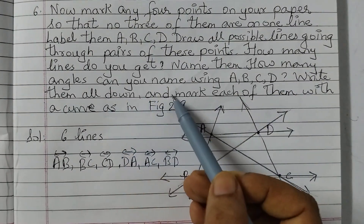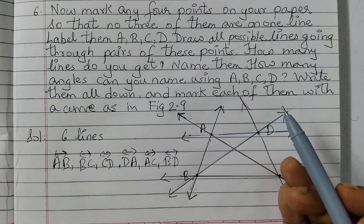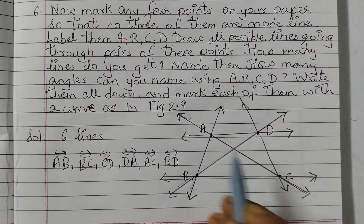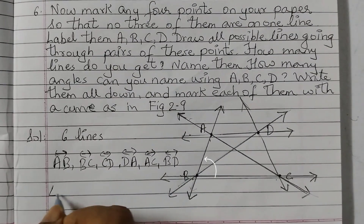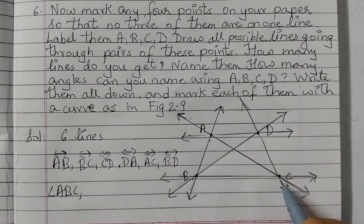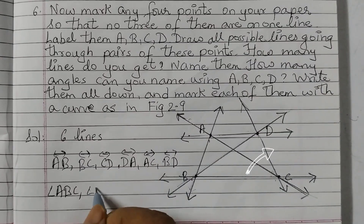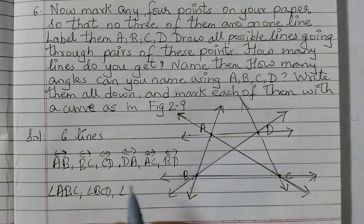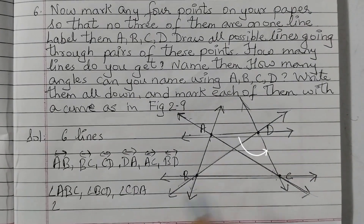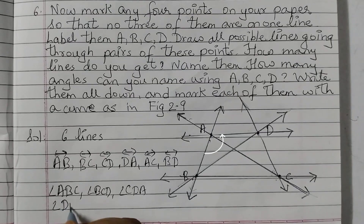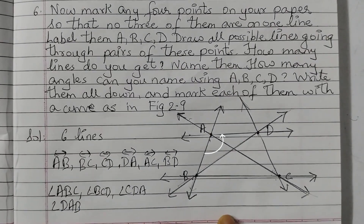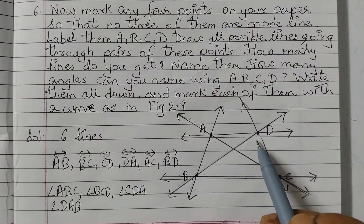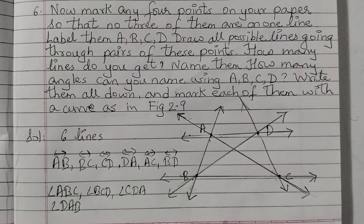How many angles can you name using A, B, C, D? Let us start naming the angles. Starting from A: angle ABC, then angle BCD, angle CDA, and angle DAB — that gives us 4 big angles. Now for the small angles, how many small angles do we have? Counting: 1, 2, 3, 4, 5, 6, 7, 8 — we have 8 small angles.